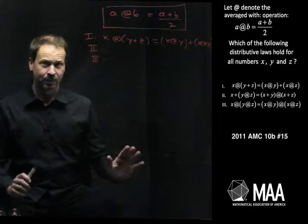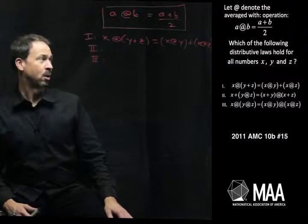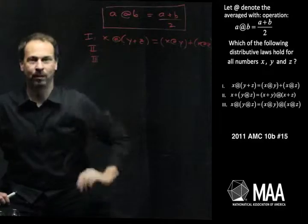It seems a little weird at first, but we'll stick with it. Let at, I guess that's how you pronounce that symbol, denote the averaged width operator, namely a at b is going to be the average of a and b. So I just wrote on the board already.